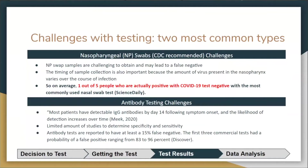Antibody tests have been reported to have a 15% false negative rate. However, due to the slow rollout of testing followed by a sudden push for testing, the accuracy of these false negative rates differs substantially from the true false negative rates.